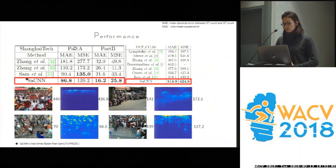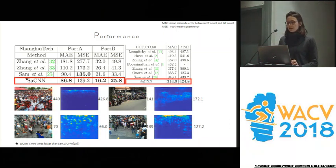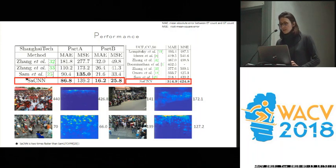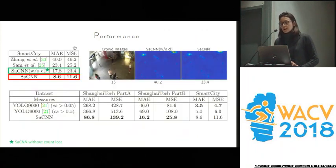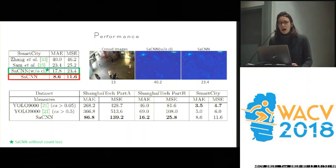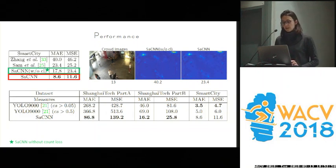On the performance results, they show that on both the ShanghaiTech and UCF CC50 benchmarks, they outperform all previous works except on Part A of ShanghaiTech. However, they are significantly more efficient than SANet. On their own sparse crowd dataset, they also outperform previous works. Shown in green is without the count loss and in red is with the count loss — having the count loss helps a lot in sparse crowd images.